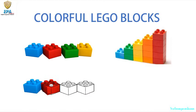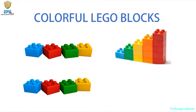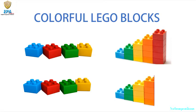Blue, red, green, yellow. There are the Lego buildings on the right side. Let us build the same example above: blue, green, yellow, orange, and red.